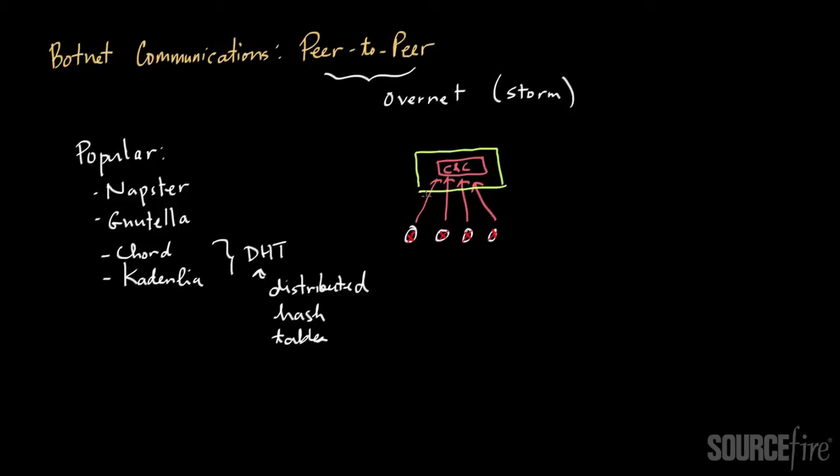So one benefit, and this is really a benefit from the perspective of a bot master, one benefit of a peer-to-peer approach is that instead of having a single point of failure, instead of having a single central CNC server, what you would have instead are bots that basically just communicate with each other. And each of them functions as its own CNC server. But you can imagine there's a cluster of bots here, maybe some bots here, et cetera. So these bots can communicate with each other and maybe get information and updates from each other rather than having a centralized mechanism to go towards.